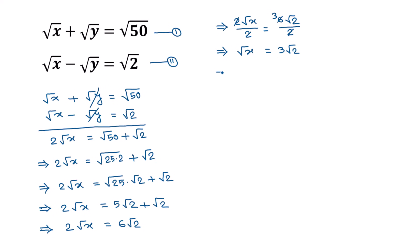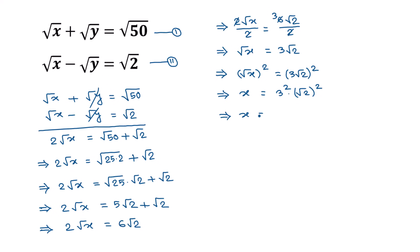Now taking square of both sides, we can write: square root of x whole square is equal to 3 times square root of 2 whole square. So x is equal to 3 squared times square root of 2 squared — the square root and square cancel — giving x equals 9 times 2, so the value of x is equal to 18.